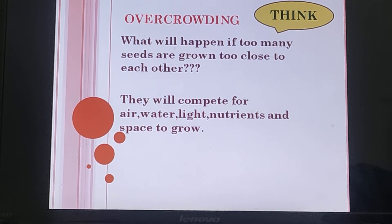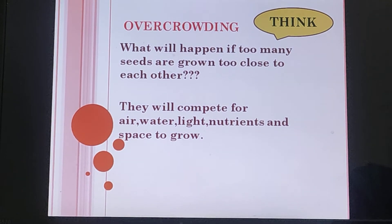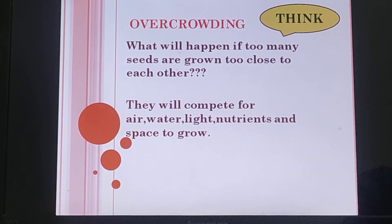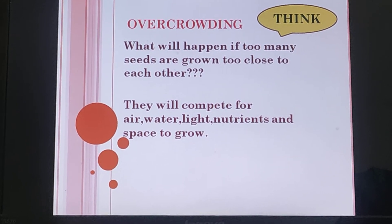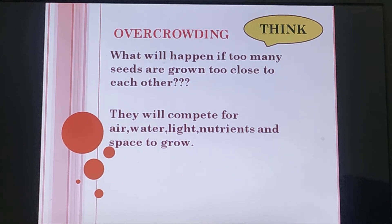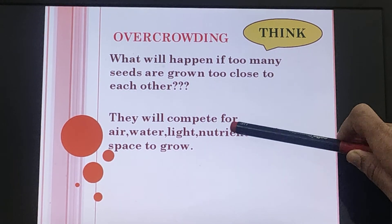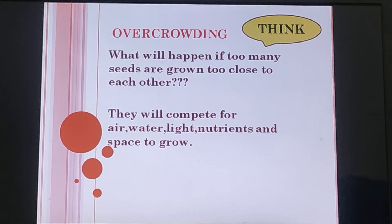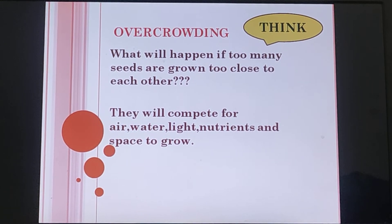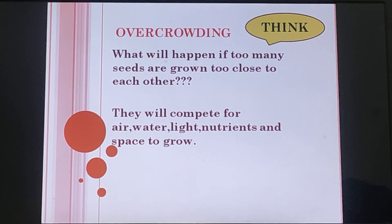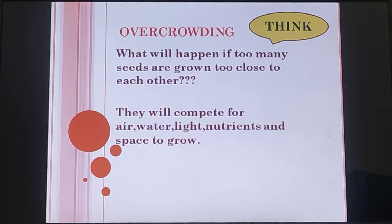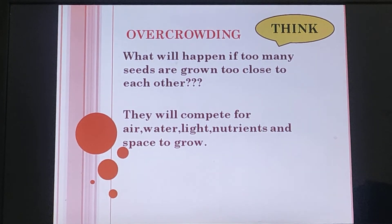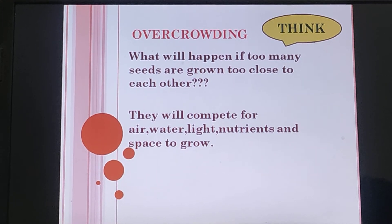Now here comes a question: there are so many fruits with too many seeds. If all the seeds of a plant are sown or fall down under the same plant very close to each other, will they all grow into new plants? The answer is no, because they will all compete for essential factors like air, water, light, nutrients, and space to grow. Some may get destroyed, while others that receive all essential conditions will germinate. This situation, when seeds are overcrowded and some are not able to germinate, is known as overcrowding of seeds. We should ensure there is no overcrowding of seeds.